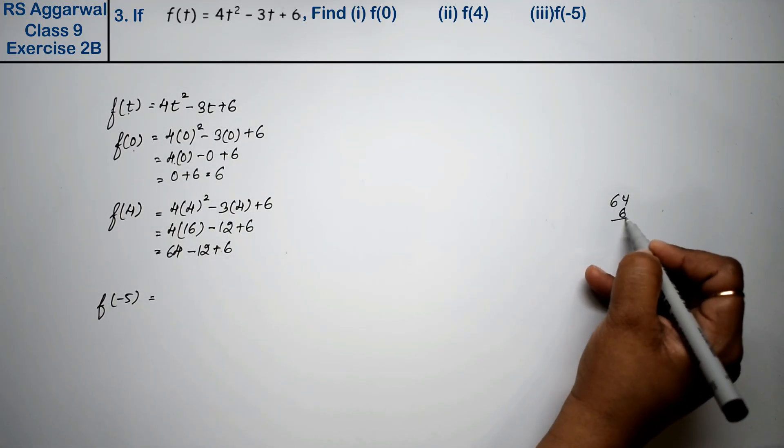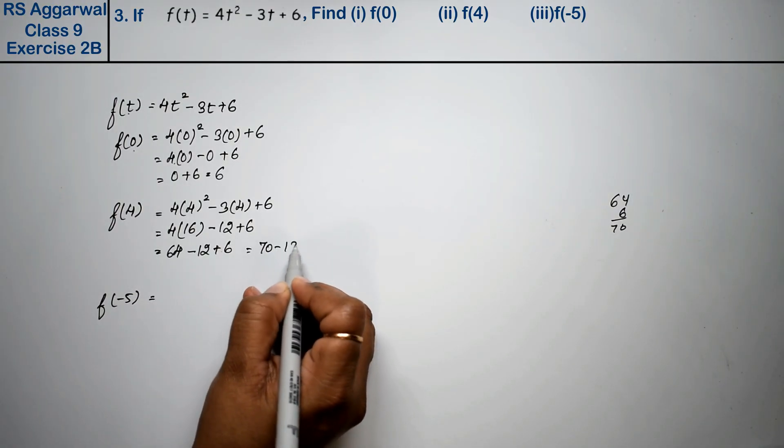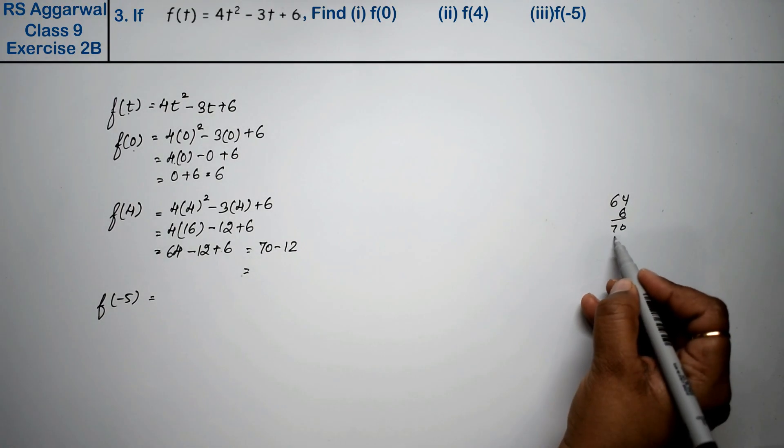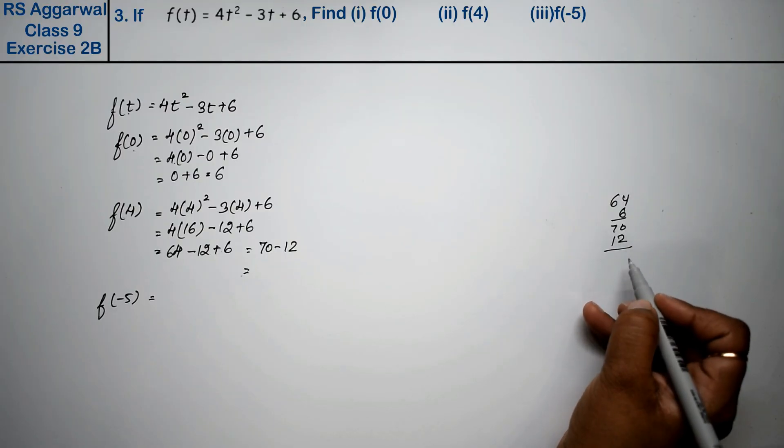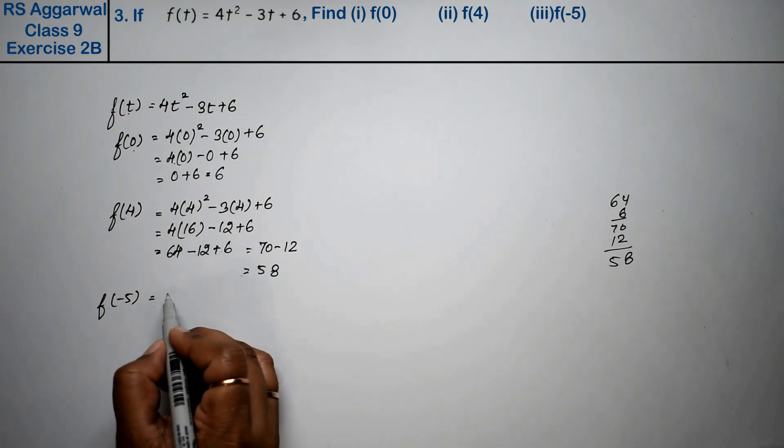So 64 and 6 is 70, then 70 minus 12. Subtracting 10 gives 60, subtracting 2 more gives 58. So f(4) = 58 is the answer.